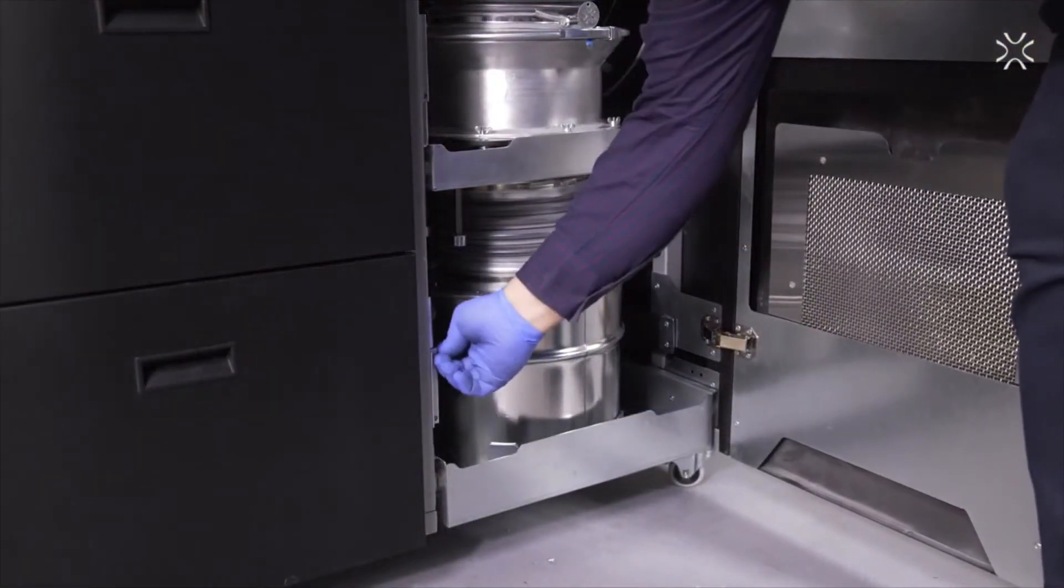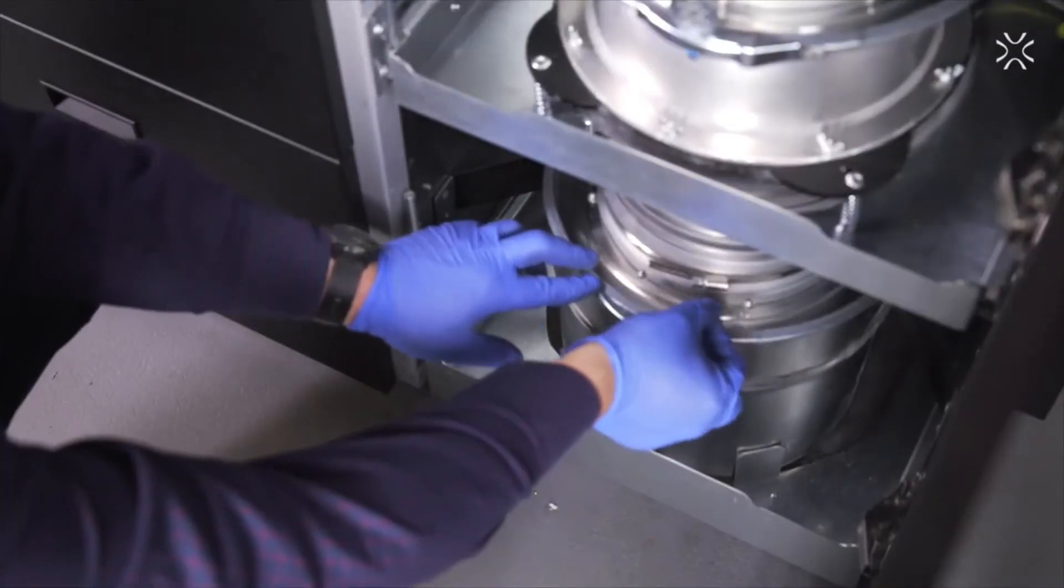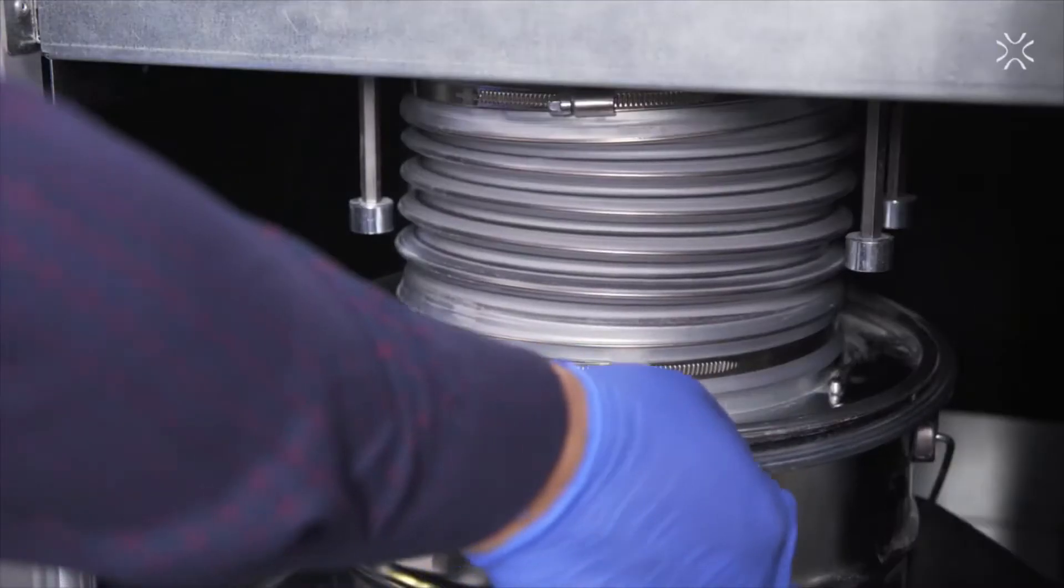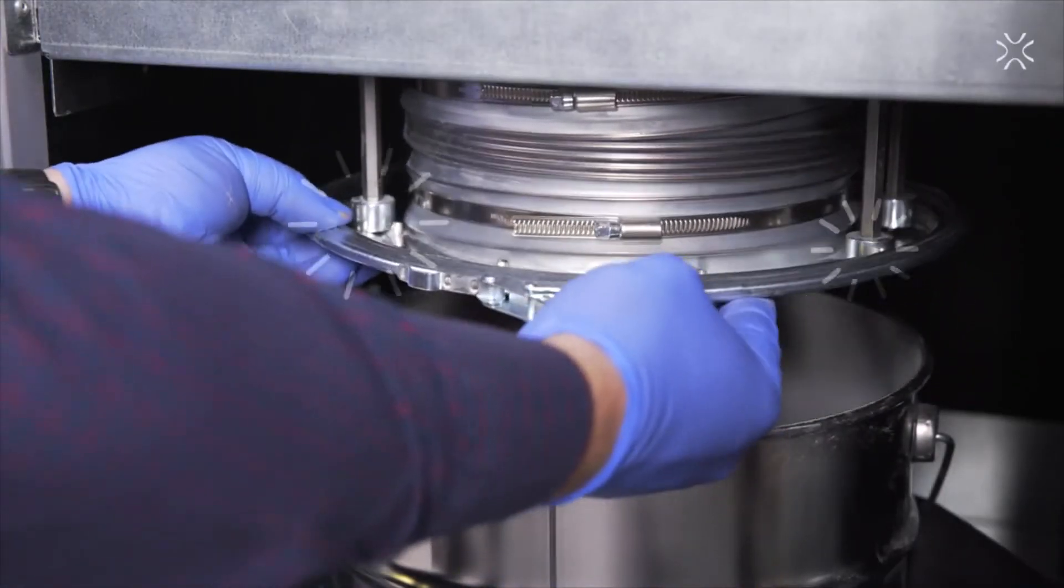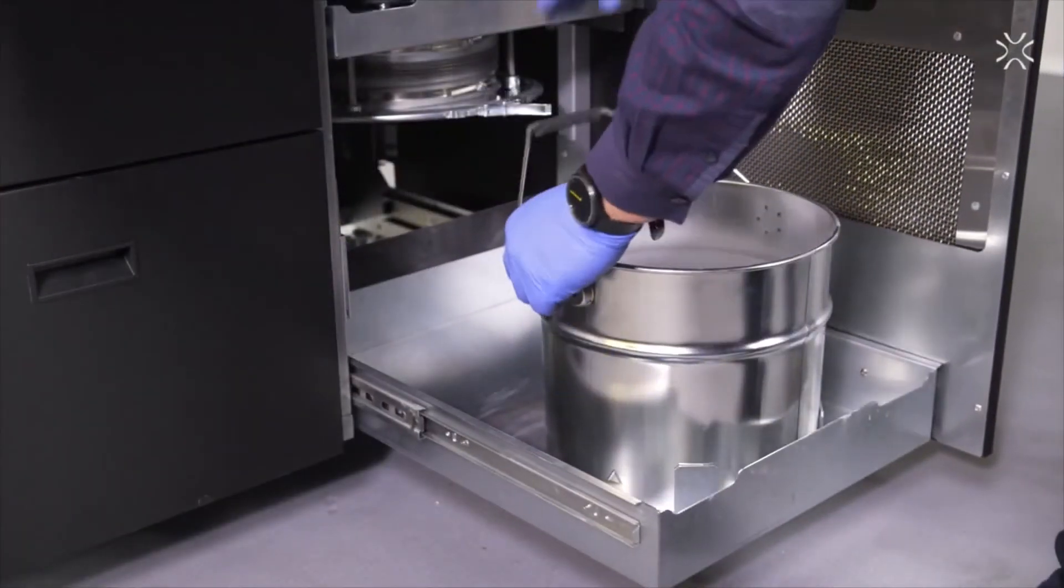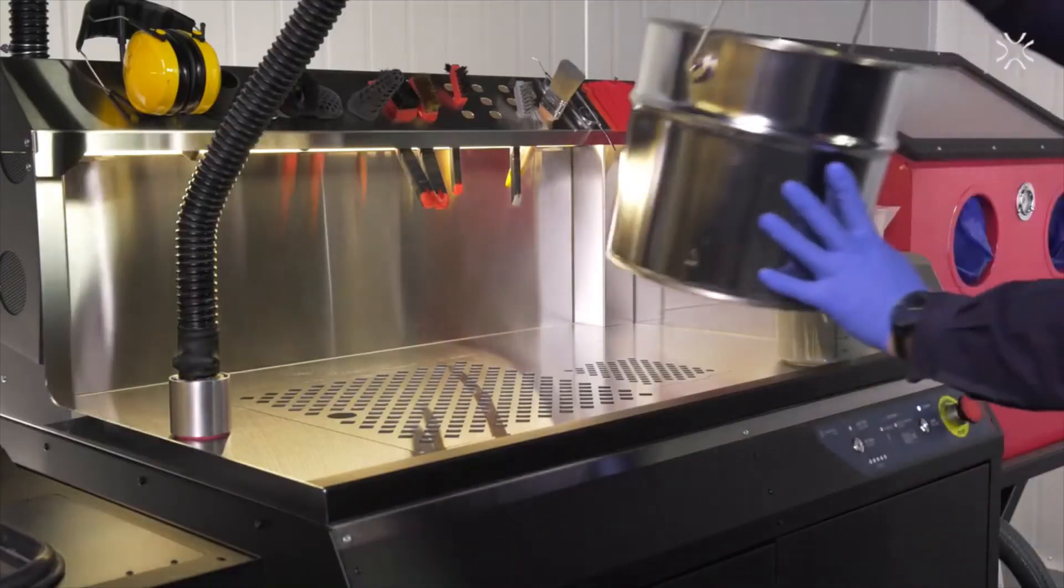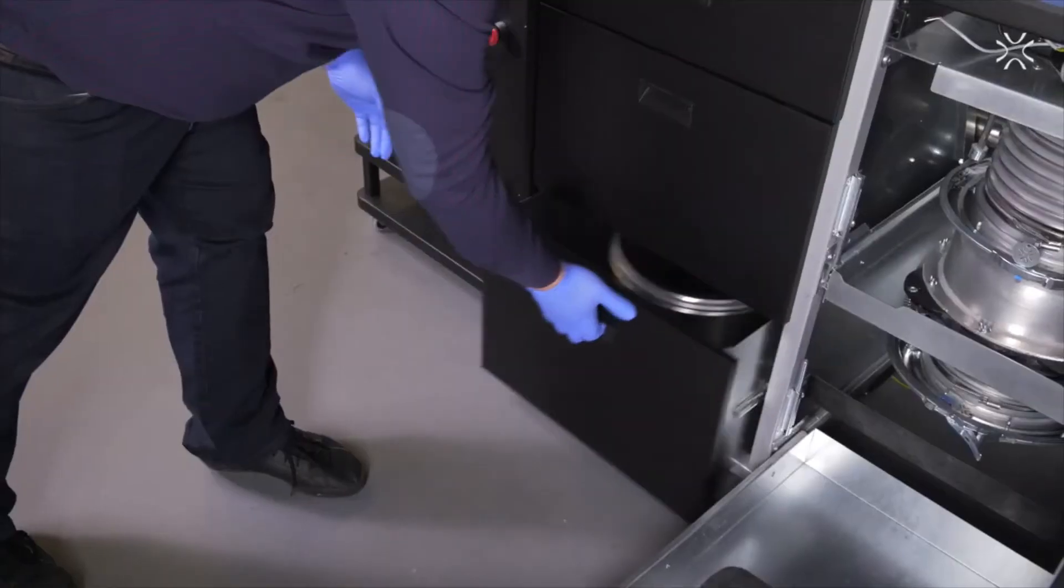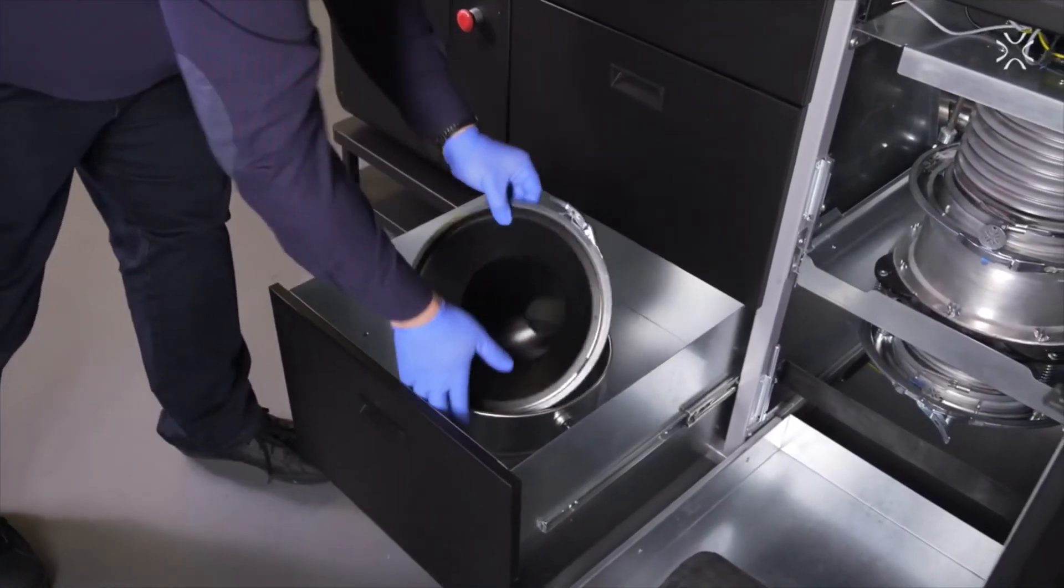When sifting has been completed, you can open the door, unlock the clamping ring on the metal container. Then unlock the container drawer lock and slide the metal container drawer out. Replace the container with an empty one from the third drawer.